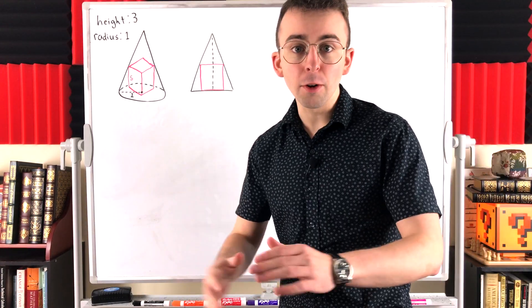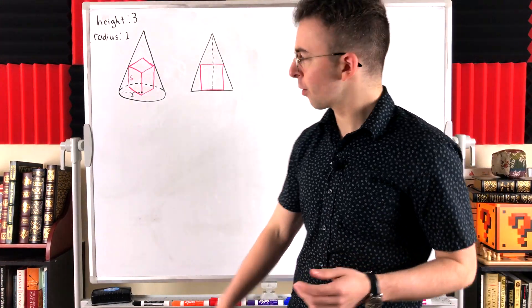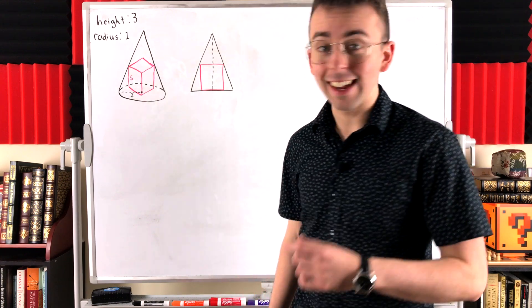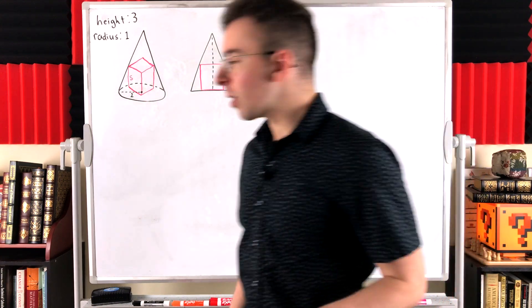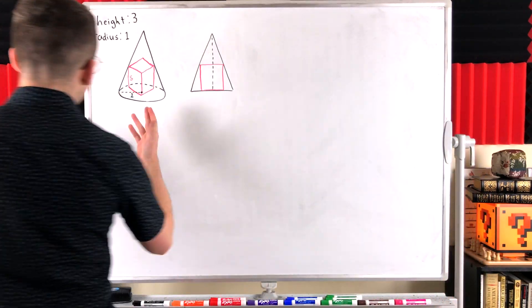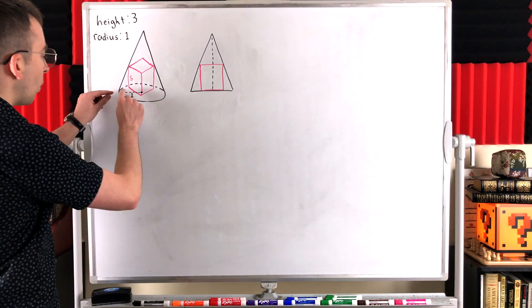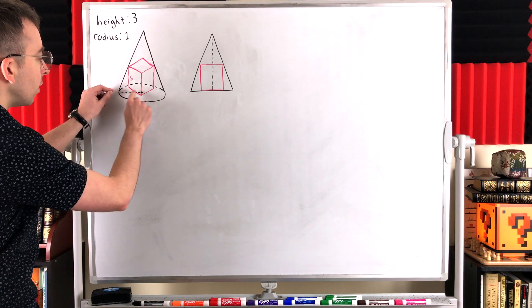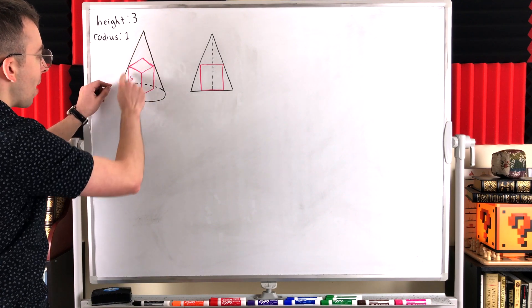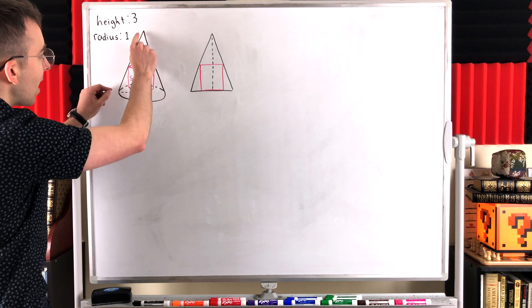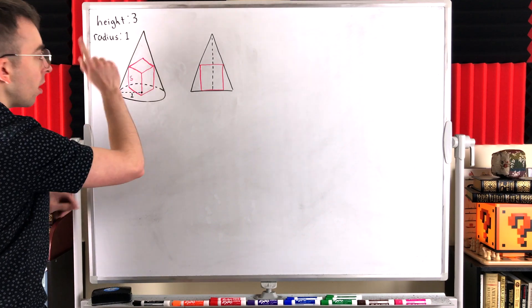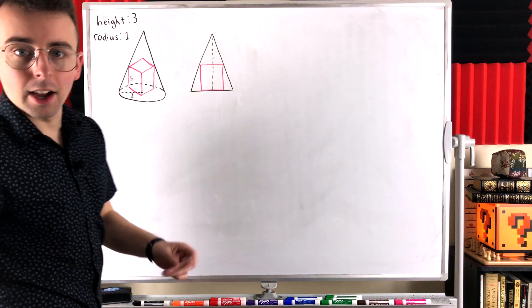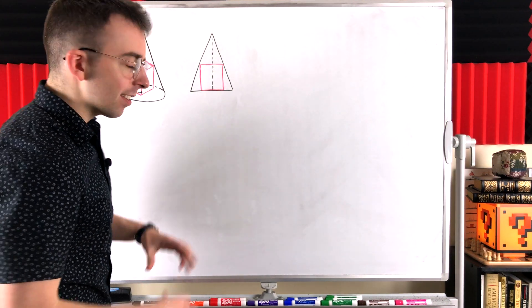We've got a right circular cone. Recall that a right circular cone is created when we take a right triangle and revolve it about one of its legs.